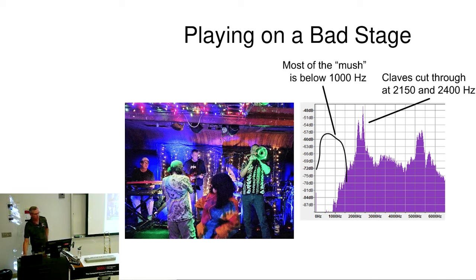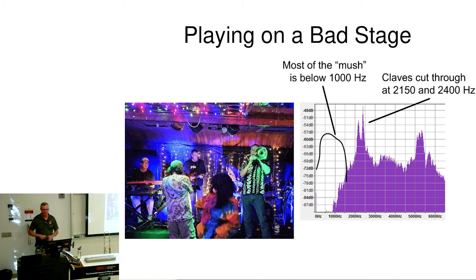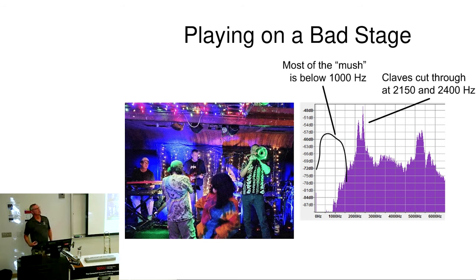If you're on a bad stage, you're going to hear mush and the band is totally going to lose its groove. How do you get the groove back? You put in a pure tone — like claves. They have slightly different frequencies, but that's going to cut through whatever is going on. Especially if the drummer goes straight into it instead of grooving, everybody's going to pay attention and she pulls everybody back in.